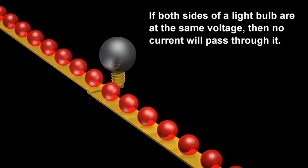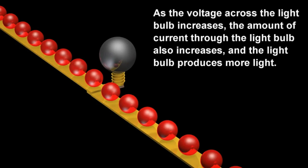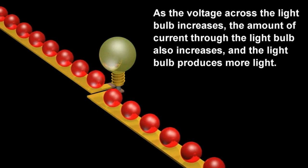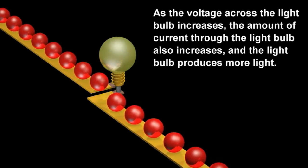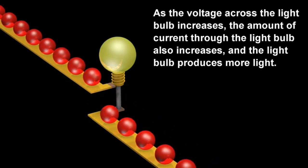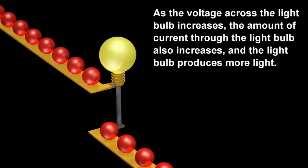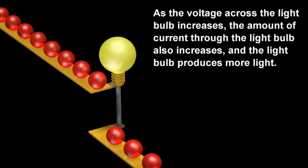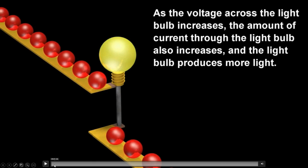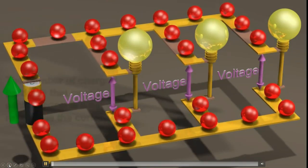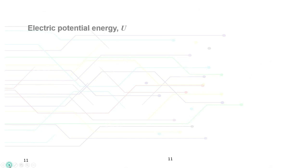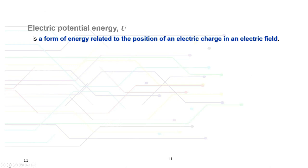From the video, we learned that electric potential energy is related to the position of an electric charge in an electric field. To have high electric potential energy, the test charge must be brought to a point close to the positive point charge. This explains why work needs to be done on the test charge to enable it to acquire electrical potential energy.